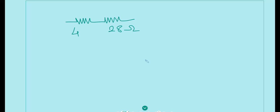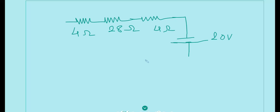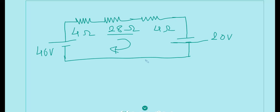The circuit is now simplified. Redrawing it: we have a 28-ohm resistor, 4-ohm, 4-ohm, and 4-ohm resistors with the 20-volt battery and 40-volt battery connected accordingly. We want to find the current flowing through the 28-ohm resistor. We assume a clockwise current I is flowing, and we apply KVL around the circuit.